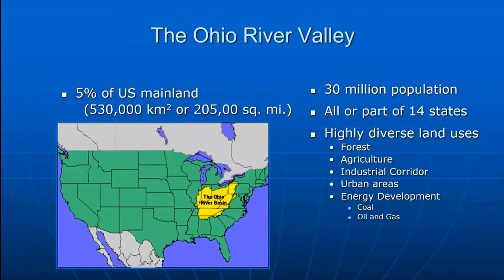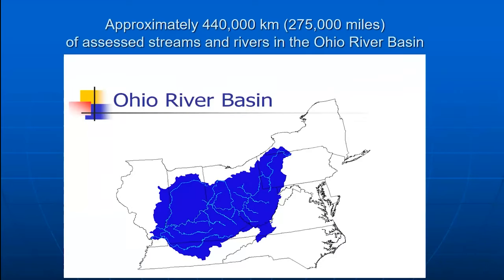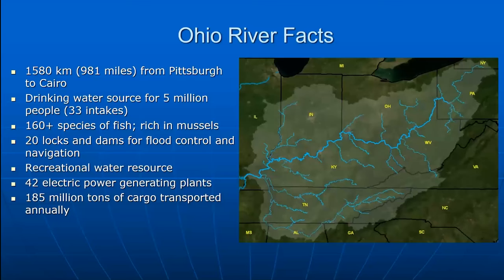The Ohio River basin is a huge geographical area of 530,000 square kilometers, or 205,000 square miles, serving 30 million people across 14 states with highly diverse land use. We have 275,000 miles of assessed streams and rivers in the Ohio River basin — assessed for their compliance with the Clean Water Act — and approximately 40% of these are impaired, meaning they do not meet the requirements as defined by standards.